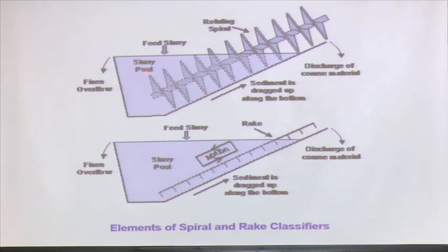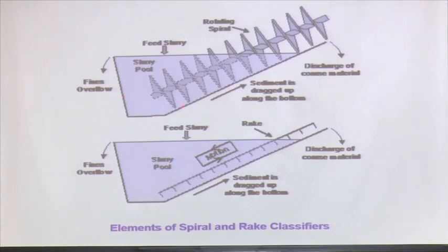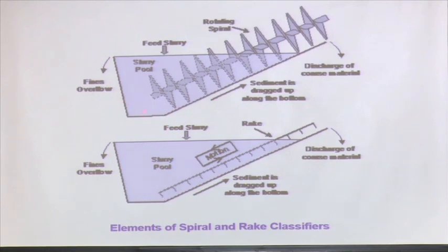The feed slurry is introduced and the coarser, heavier particles settle. Once settled, they accumulate and reduce the pool volume, so I need to take them out using a spiral screw action. That is a material handling system - rotating spirals collect the relatively coarser materials, while the finer materials overflow with the water and are collected separately. After that, solid-liquid separation is still required.